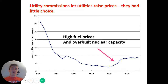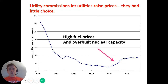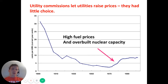Utilities built too much capacity — specifically, they spent a lot on nuclear power plants that in the end they realized they didn't actually need to meet electricity demand. And even though demand was lower, the costs associated with building and maintaining those plants stayed about the same, because a significant portion of those costs was tied up in the mortgage payments they had to make to pay off all the debt they borrowed to build the plants in the first place.